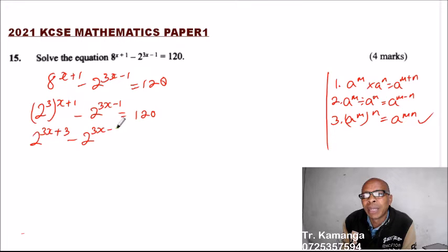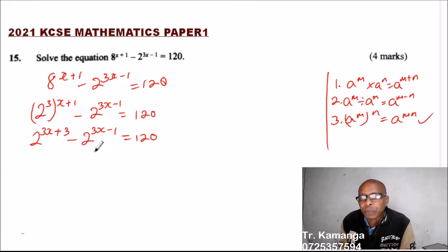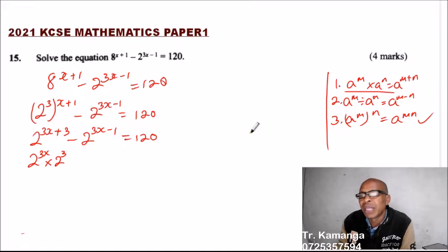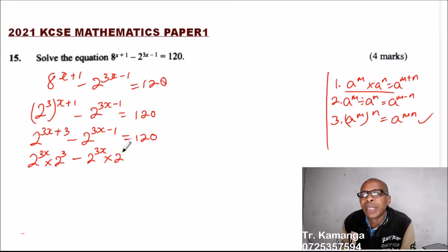We can separate the 2^(3x+3) term using the first law of indices, rewriting it as 2^(3x) multiplied by 2^3, so the expression becomes 2^(3x) multiplied by 2^3, minus 2^(3x) multiplied by 2^(-1), equals 120.